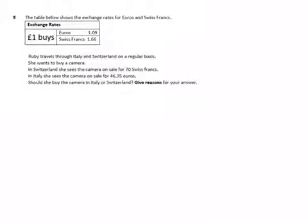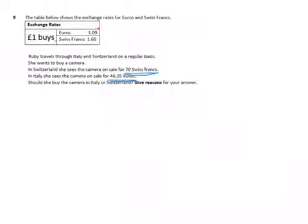Here we've got some different exchange rates and a price of a camera that we want to buy. We're told it could be 70 Swiss francs or 46.35 euros. The best thing for us to do is to convert that into pounds, because we have the exchange rates up here to convert both euros and Swiss francs into pounds.